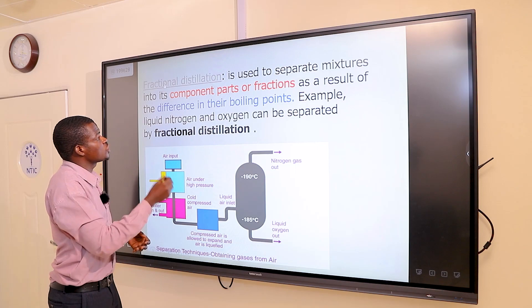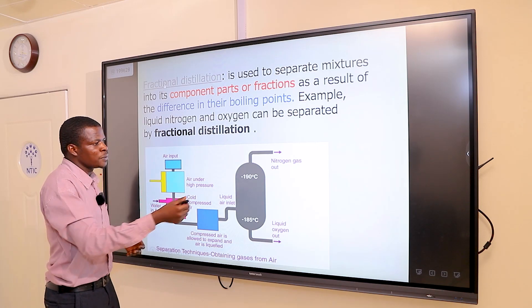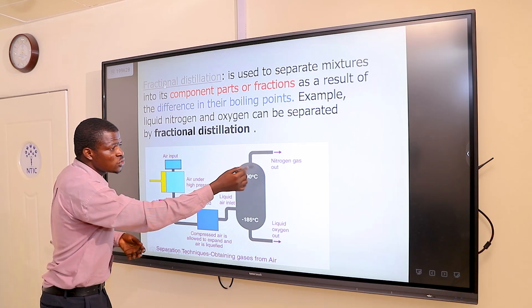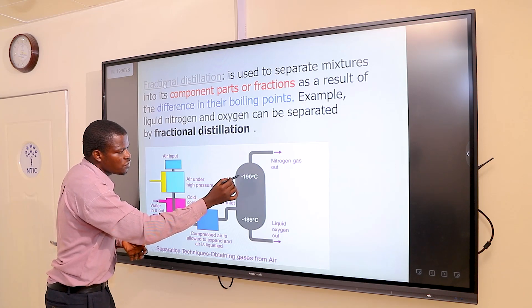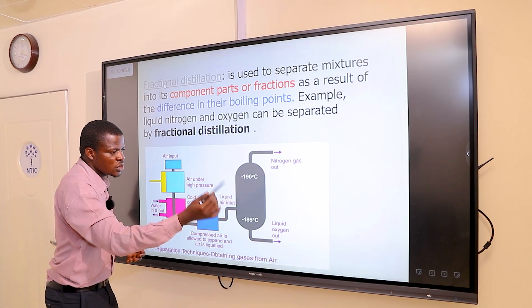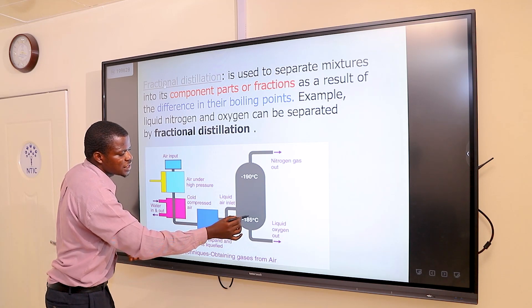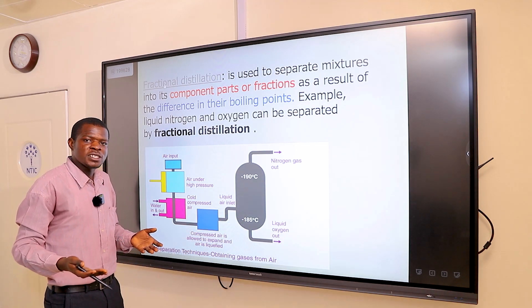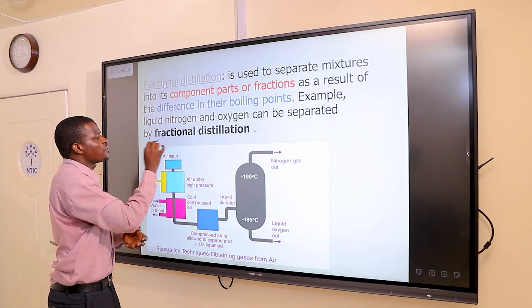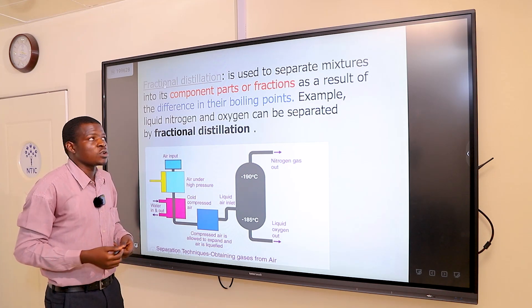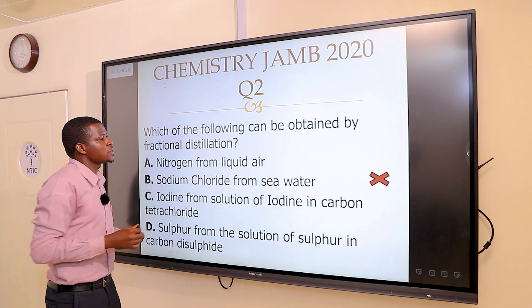Another example is liquid nitrogen and oxygen. They can be separated by fractional distillation. In the fractional distillation of liquefied nitrogen, nitrogen has a boiling point of minus 196 degrees Celsius, whereas oxygen has a boiling point of minus 183 degrees Celsius. Since their boiling points are different, we can apply fractional distillation to separate the components.